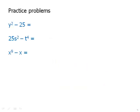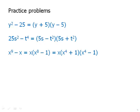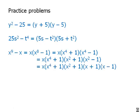Here are some practice problems — pause the video and factor these fully. The first is straightforward. The second can be factored directly. The third requires factoring out an x first, then factoring into x to the 4th plus 1 times x to the 4th minus 1. That second factor is a difference of squares, and x squared minus 1 factors further. The fully factored form ends up with five different factors.